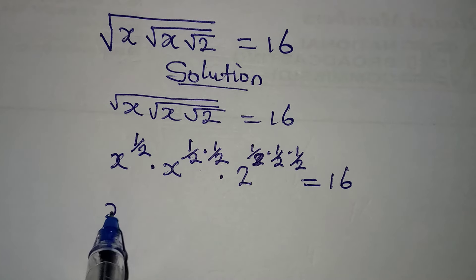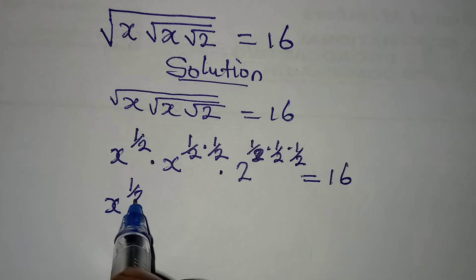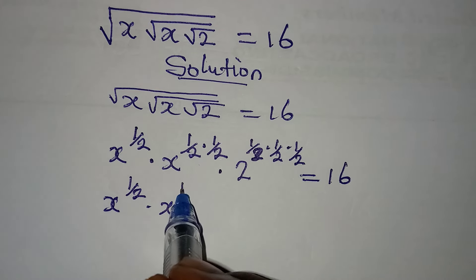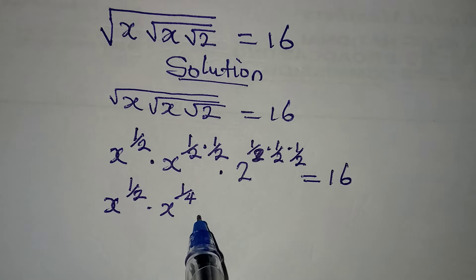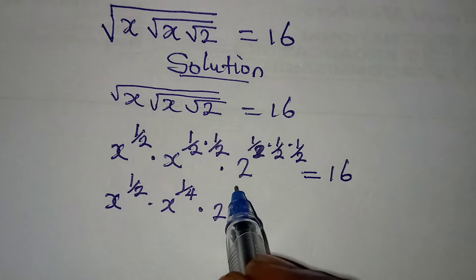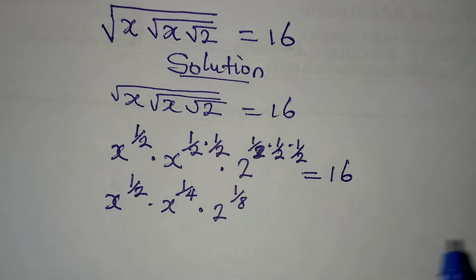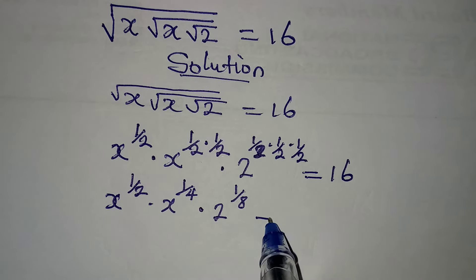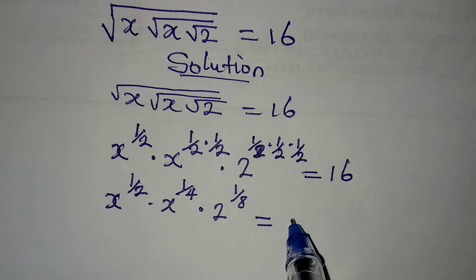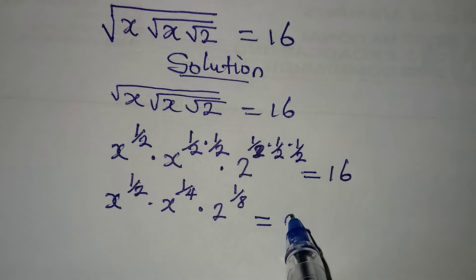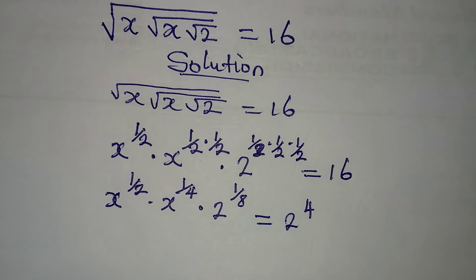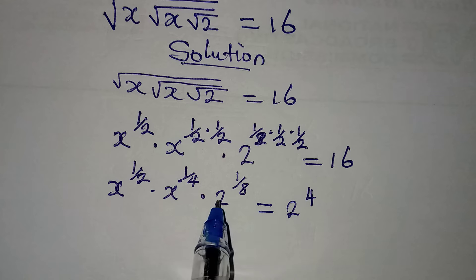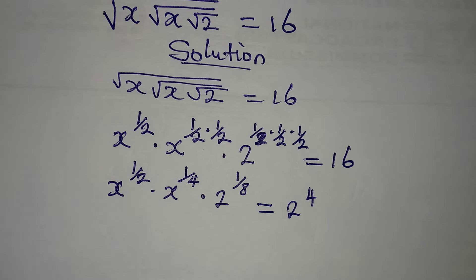So from here we have x to the power of 1 over 2, multiplied by x to the power of 1 over 4, multiplied by 2 to the power of 1 over 8. I have to multiply the powers, and this will be equal to 2 to the power of 4, since 16 equals 2 to the power of 4. These 2s will all be in the same base.